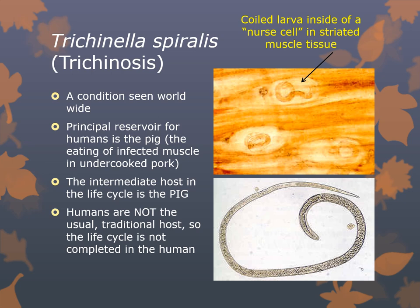Trichinella spiralis causes a condition known as trichinosis. It is seen worldwide among meat-eating populations; the principal reservoir for humans is the pig, though bear and deer meat can also be sources. There are usually only about 100 cases per year in the United States. The intermediate host is the pig. Humans are accidental hosts, so the life cycle is not completed in the human — instead, a nurse cell is seen in the infected human. There is no egg or ova stage in humans. A coiled larva can be seen inside the nurse cell in striated muscle tissue.